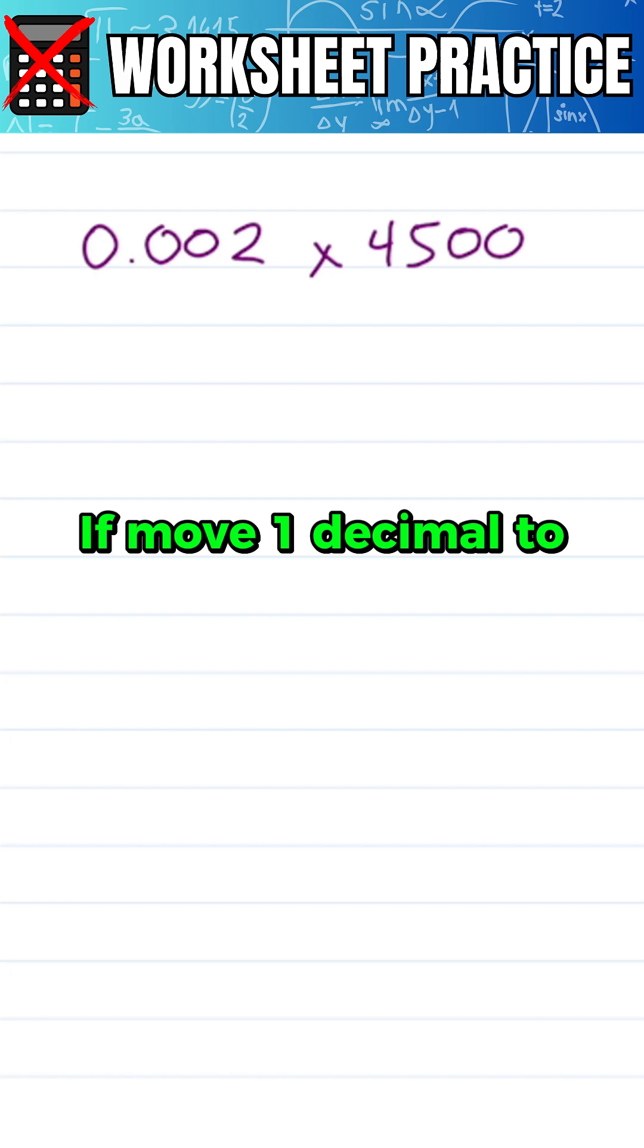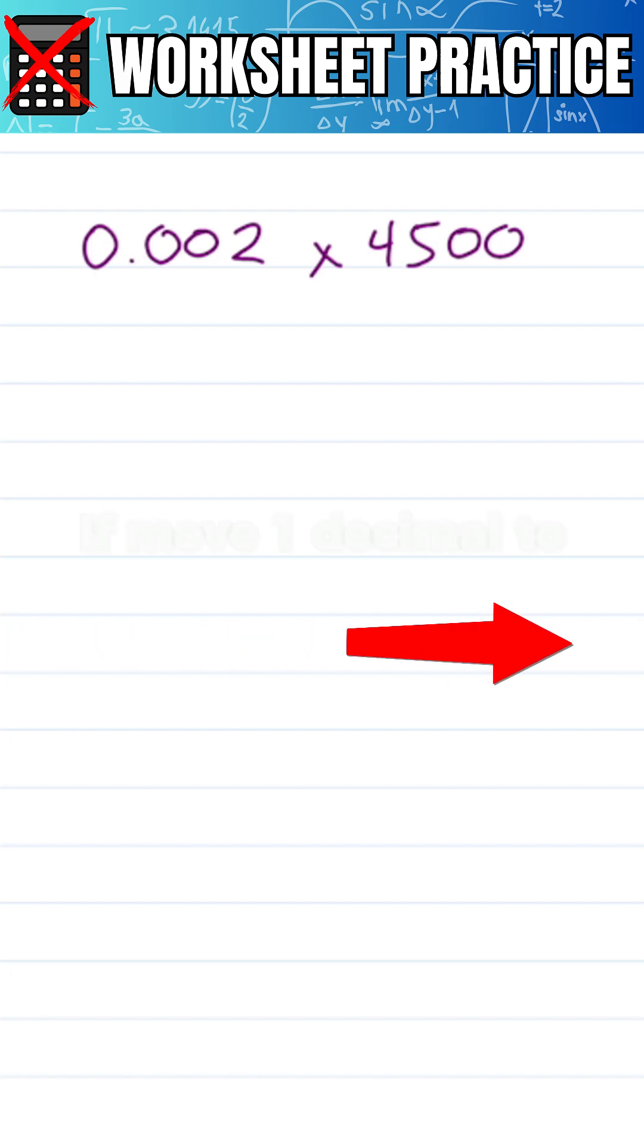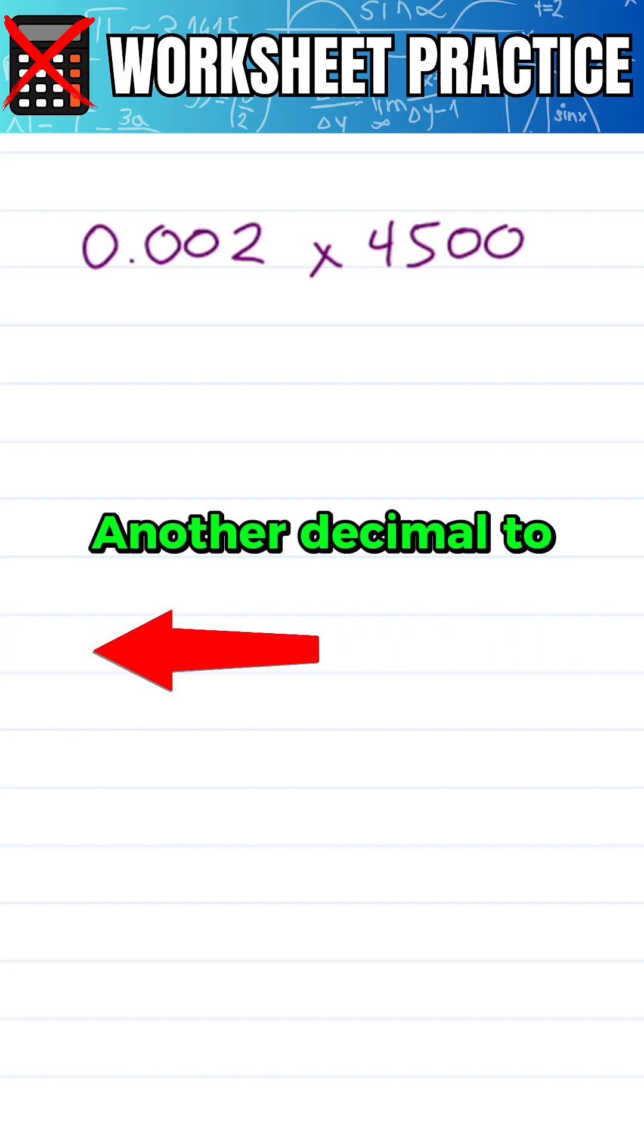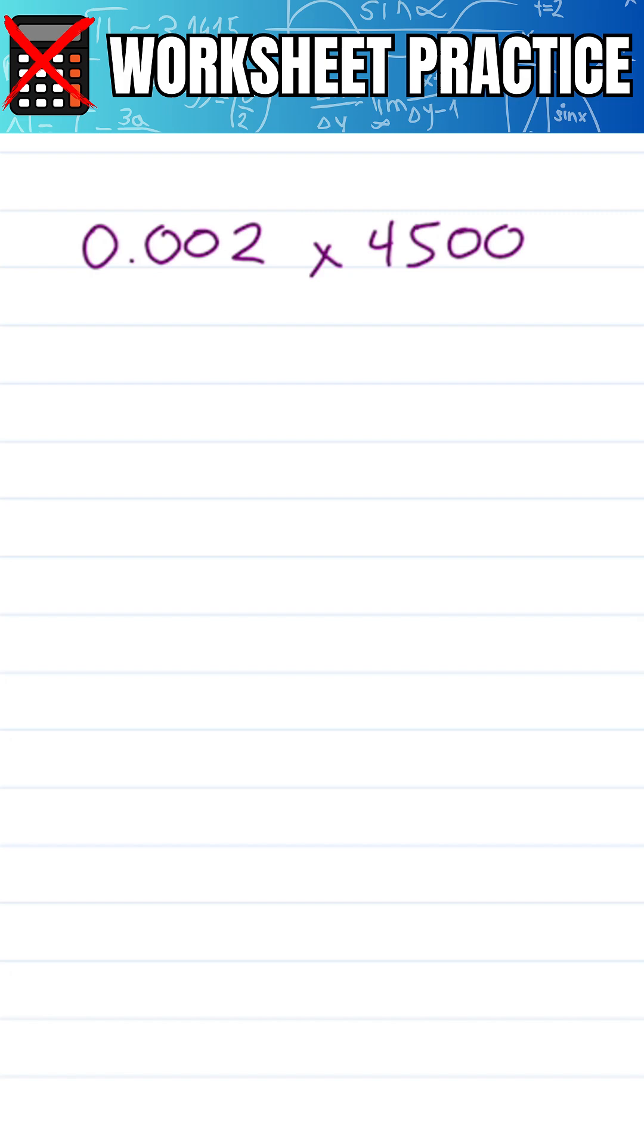With the decimal trick, if I move one decimal to the right and another to the left by the same amount, the values don't change because it's like I'm multiplying by 10 over 10, 100 over 100, which is equal to 1.